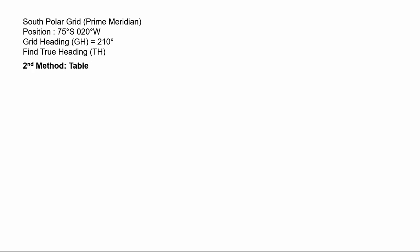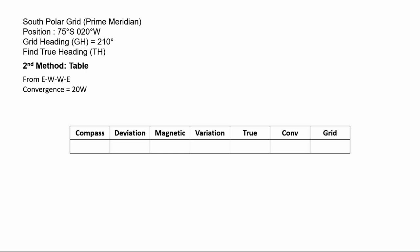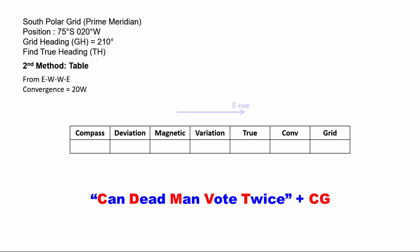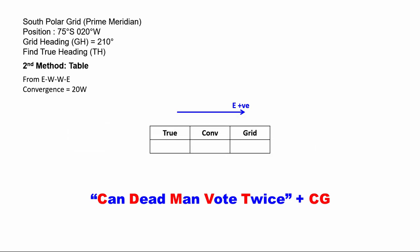For the second method, we use a table. This also requires the EWWE diagram — convergence is 20 degrees west, carried forward from method one. The table used is the CDMVT table, with an additional CG column (convergence and grid) added to the far right. The mnemonic is 'Can dead men vote twice? CG.' This table is filled from right to left, with east as positive and west as negative. Filling in the convergence column as 20 west (negative) and the grid column as 210, we add 210 to 20 to get a true heading of 230 degrees. As a check: 230 minus the 20 degree convergence gives 210 degrees grid heading.